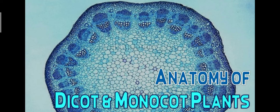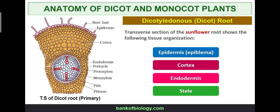We are now going to study the anatomy of dicot and monocot plants — their stems and roots. We will study transverse sections. First, the dicot root: this is the transverse section of a sunflower root, showing the following tissue organization: epidermis, cortex, endodermis, and stele.